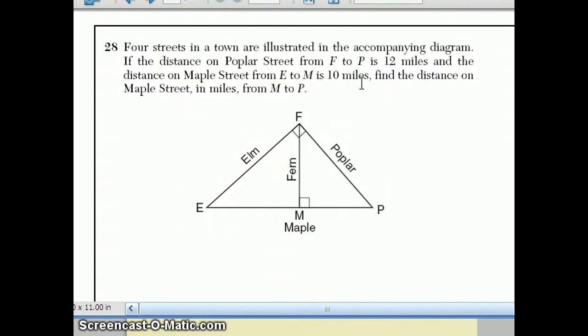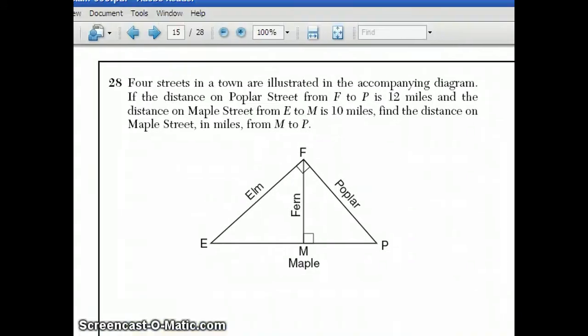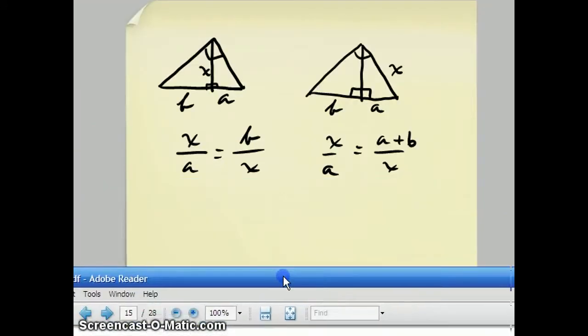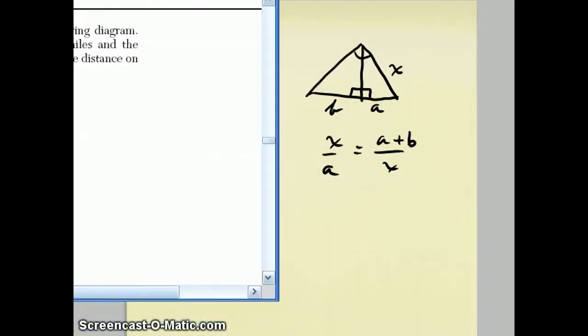Okay you have FP is 12 so they're telling you a leg and EM is 10 and they want to know MP. So what we have happening here, let's draw it over here.